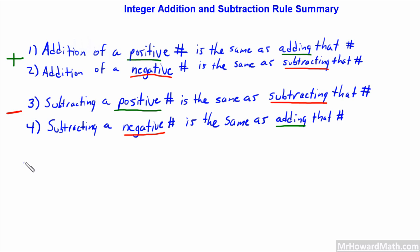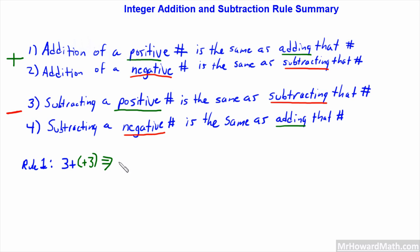Rule 1 example: Addition of a positive is the same as adding that number. So three plus positive three is the same as just three plus three, which equals six. Adding this number — adding three — equals six.